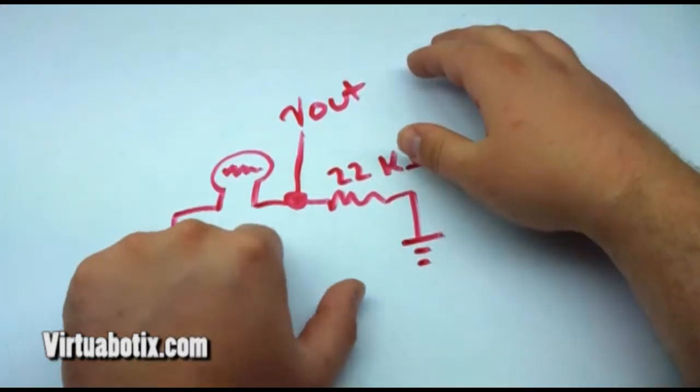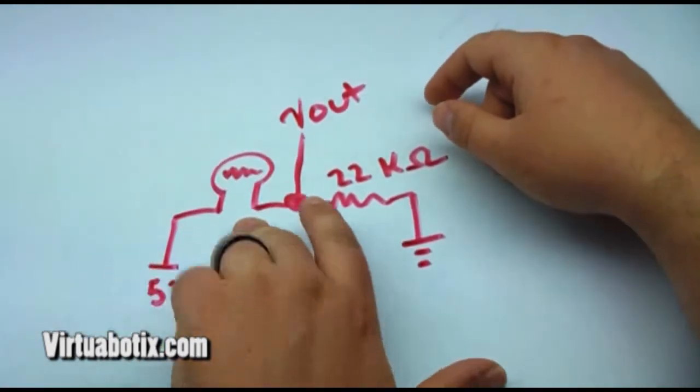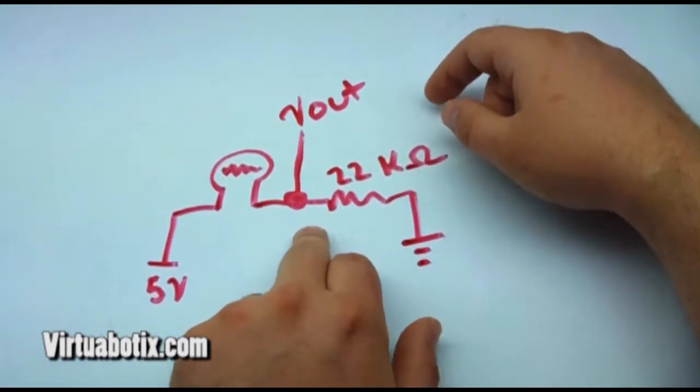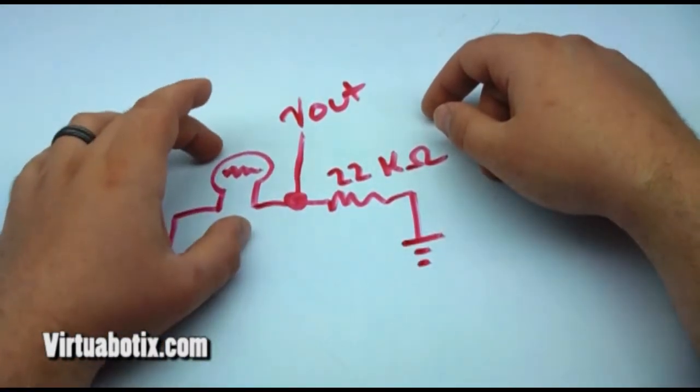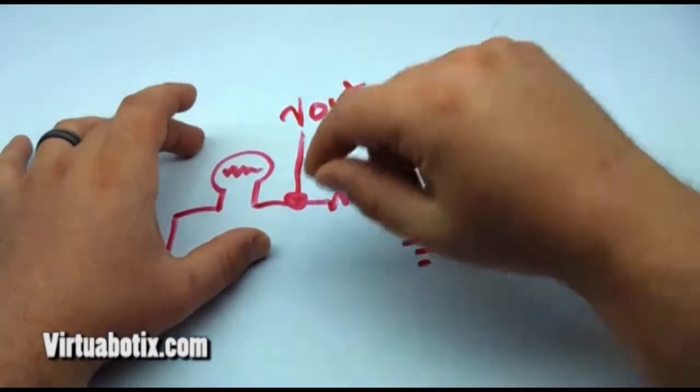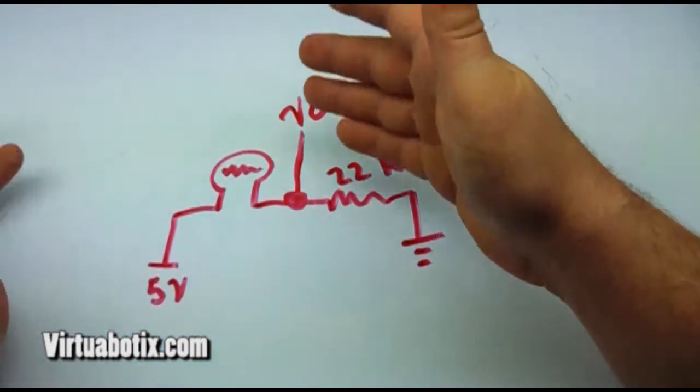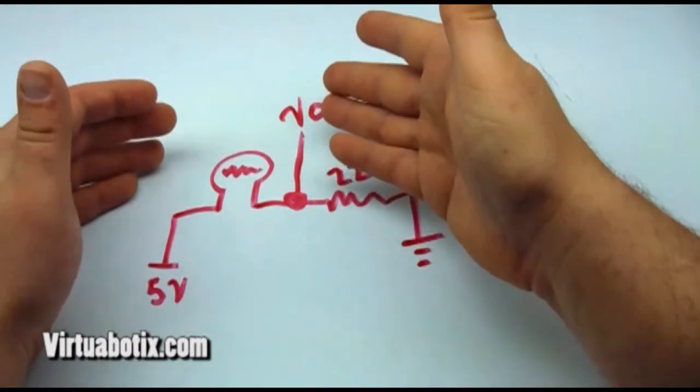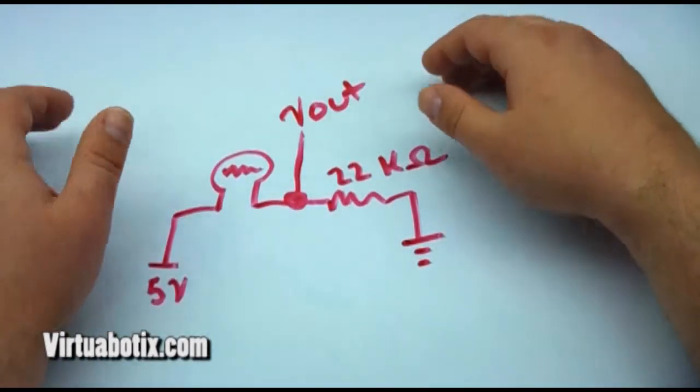If this was to be 0 ohms then we would see 5 volts right here. If this was to be 22k ohms we would see 2.5 volts. And so as the resistance on this increases we get less and less voltage on Vout. And as it decreases we get more and more voltage on Vout.